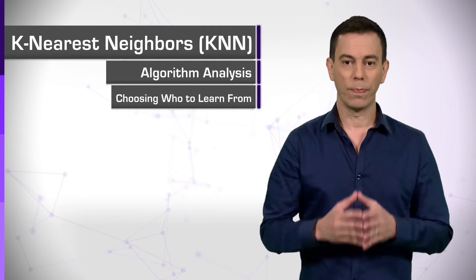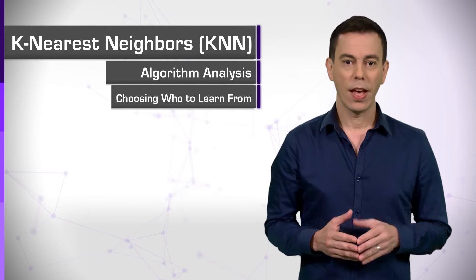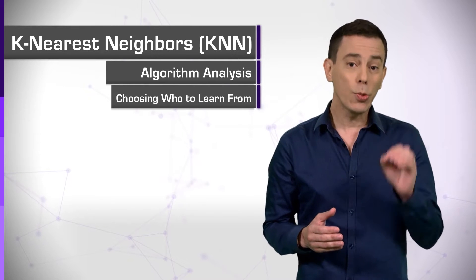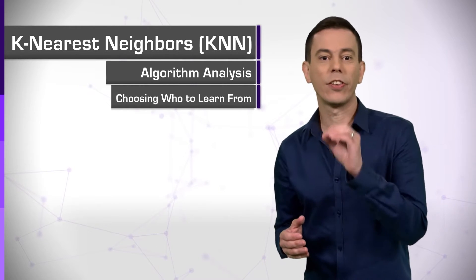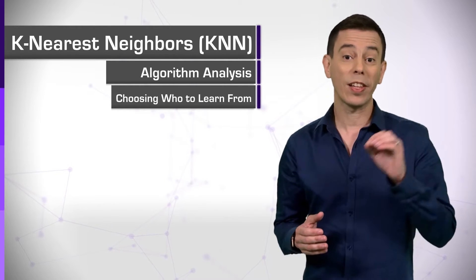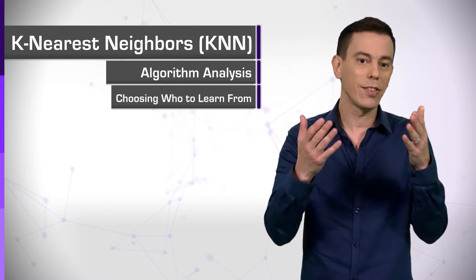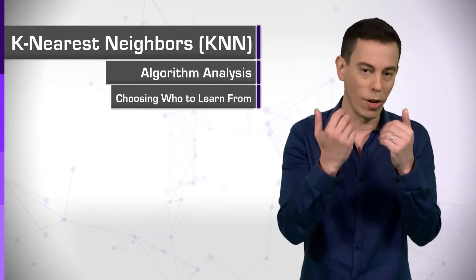Choosing who to learn from. The k-nearest neighbors algorithm is a supervised machine learning algorithm that learns from the data points we identify as the right points to learn from. The challenge, therefore, is not to draw the conclusions, but to decide who should teach us and how.